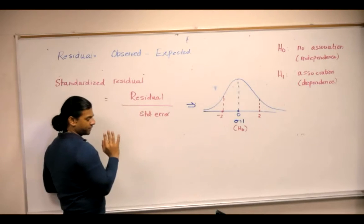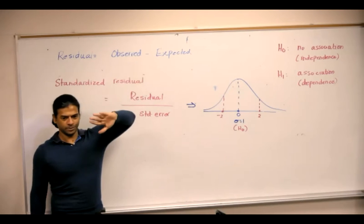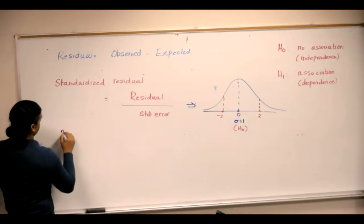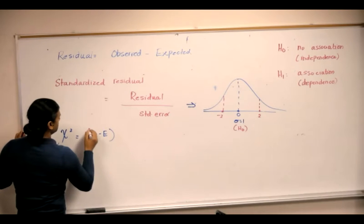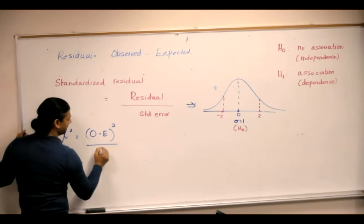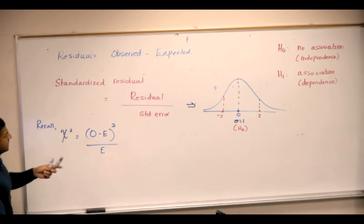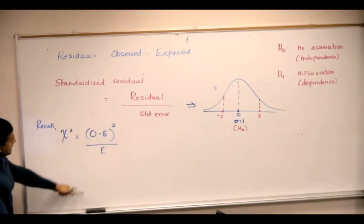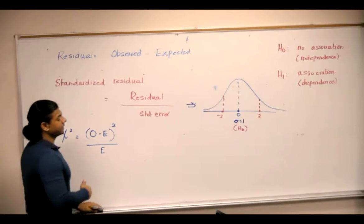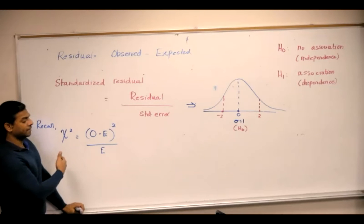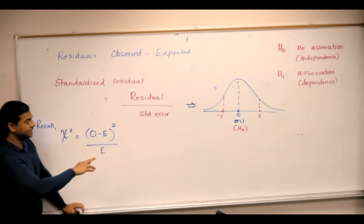The standardized residuals simply measure the difference between the observed and the expected values. Now, if you recall, chi-squared of the cell was simply observed minus expected squared divided by E. The only difference is that here I've squared the numerator, and instead of standard error I had the expected counts. With chi-squared, if you go farther and farther to the right, you reject and conclude that there is an association or dependence.